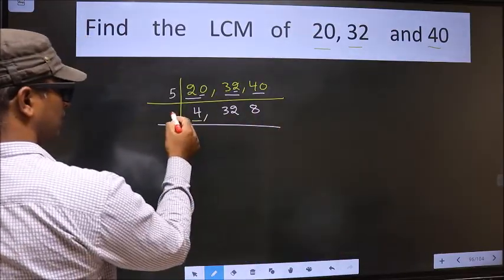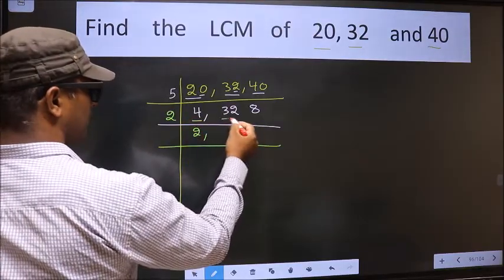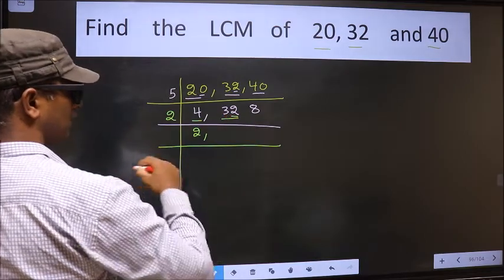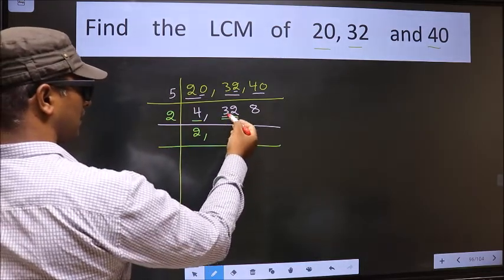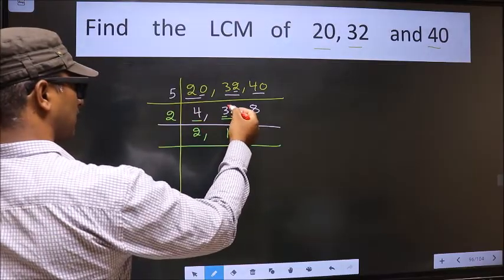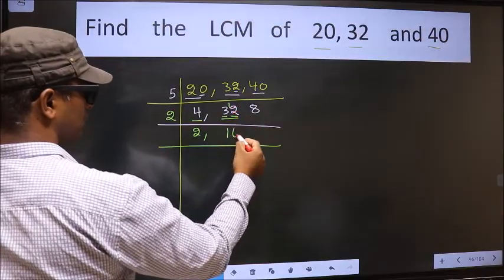Now, here we have 4. 4 is 2, 2 is 4. The other number 32, last digit 2, even, so this number divisible by 2. First number 3. A number close to 3 in 2 table is 2, 1 is 2. 3 minus 2, 1, 1 carried forward making it 12. When do we get 12 in 2 table? 2, 6, 12.